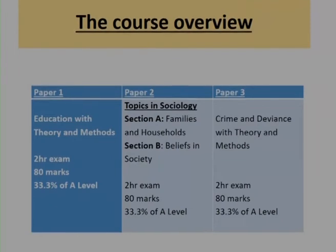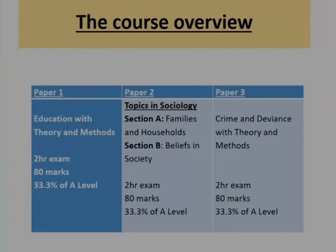Let me talk to you a little bit about the exams. There are three papers in the sociology A level — they are all two hours each. Paper one is education with theory and methods. Paper two is topics in sociology, and we choose to teach you families and households and beliefs in society. Paper three is crime and deviance with theory and methods. All papers are equally weighted, so it's six hours of exams in total.